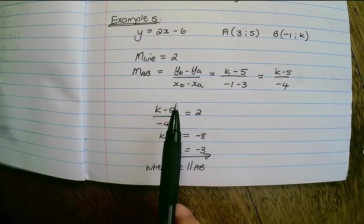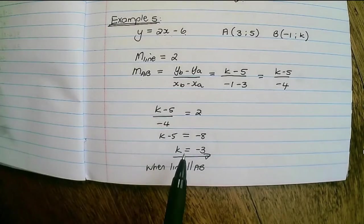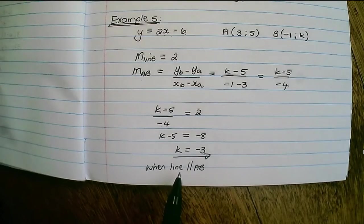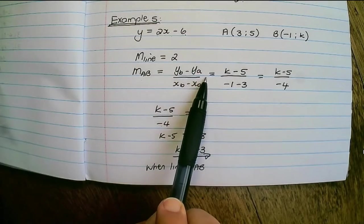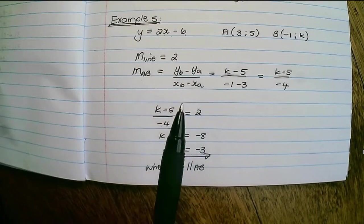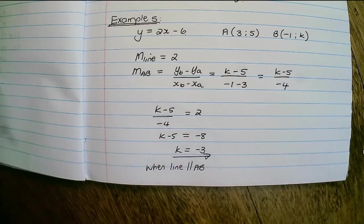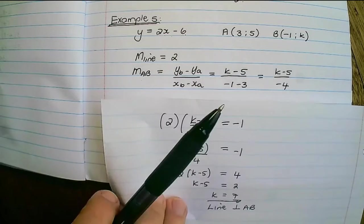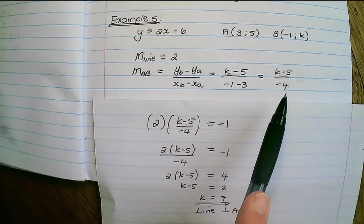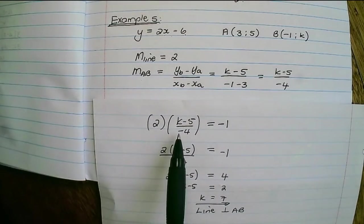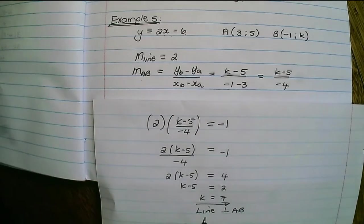To summarize: k equals negative 3 when the lines are parallel — find both gradients and set them equal to each other. When the lines are perpendicular, find both gradients but multiply them together to equal negative 1.